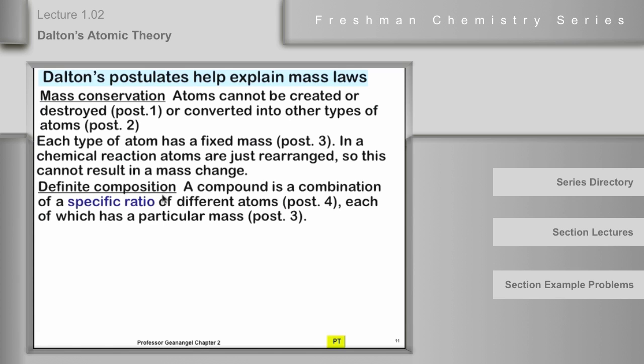What about definite composition? A compound is, essentially, a combination of a specific ratio of different atoms, by postulate 4, and each of those atoms has a particular mass, by postulate 3. So, what we have here is a circumstance where, if you have a set ratio of the atoms, of different atoms A, B, C, whatever they are, in a compound, and this is in every sample of that compound, then definite composition follows from specific ratio and each atom having a fixed mass.